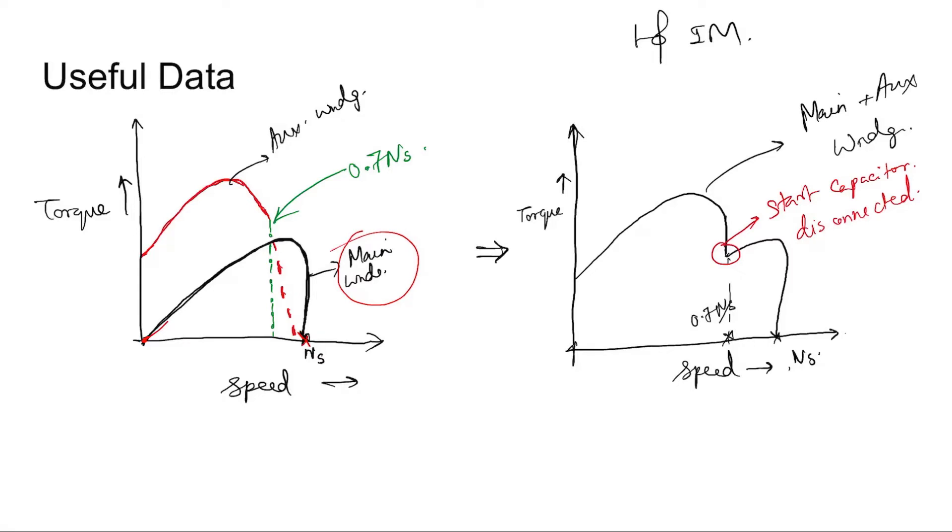If you add the auxiliary winding to improve the starting torque and then disconnect it at 0.7 ns synchronous speed, a shift in the torque speed characteristics from this curve to this curve is being observed.